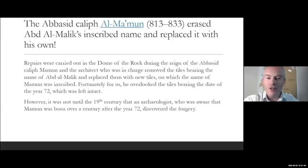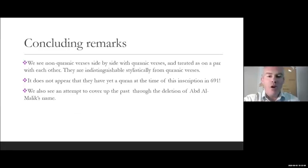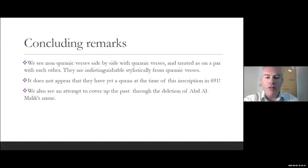It was not until the 19th century - 1000 years later - that an archaeologist who was aware that Al-Mamun was born over a century after year 72 discovered the forgery. In conclusion: we've seen non-Quranic verses side by side with Quranic verses, treated on a par with each other and indistinguishable stylistically from Quranic verses. It does not appear that they yet had a Quran at the time of this inscription in 691. And we also see an attempt to cover up the past through the deletion of Abd al-Malik's name.